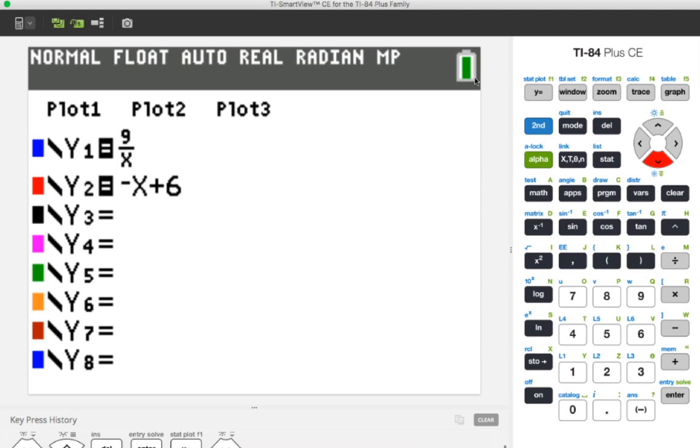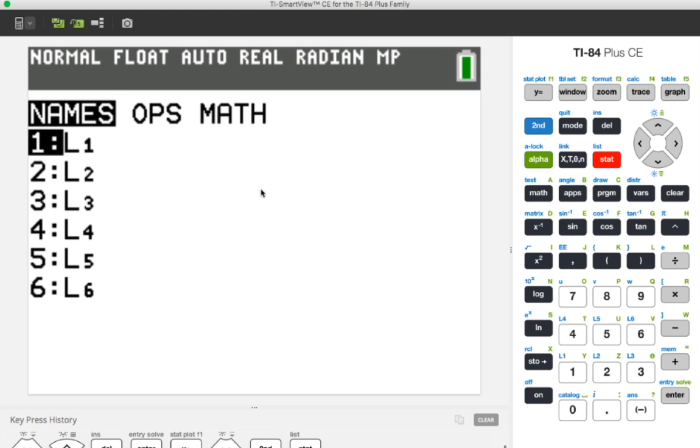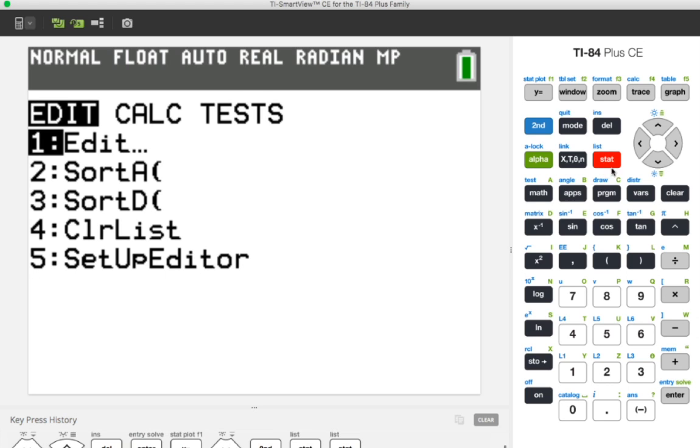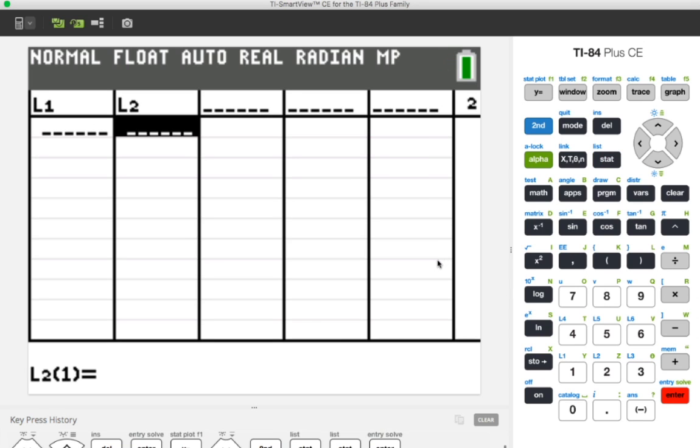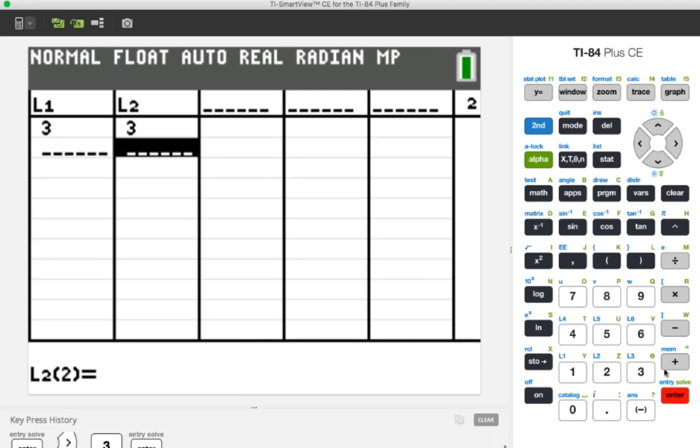All right, notice I've already put the two equations in place and what I want to do now is let's go ahead and add the point to the graph. So let's go ahead and call up our listing. So just press the stat button, go down to edit.